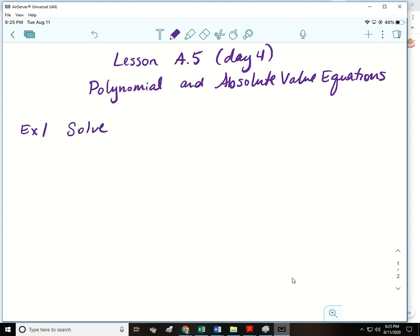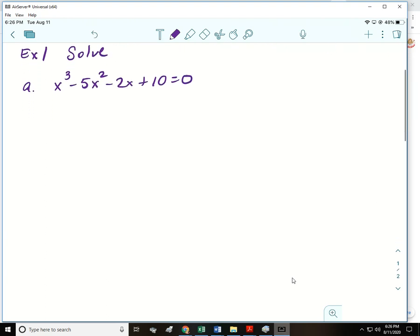For example one we're just going to solve this. First example is the polynomial equations. For a we have x cubed minus 5x squared minus 2x plus 10 equals 0. This is one like you have in my very first day of class, just some review equations and when there's four terms what you're going to do is solve by grouping.